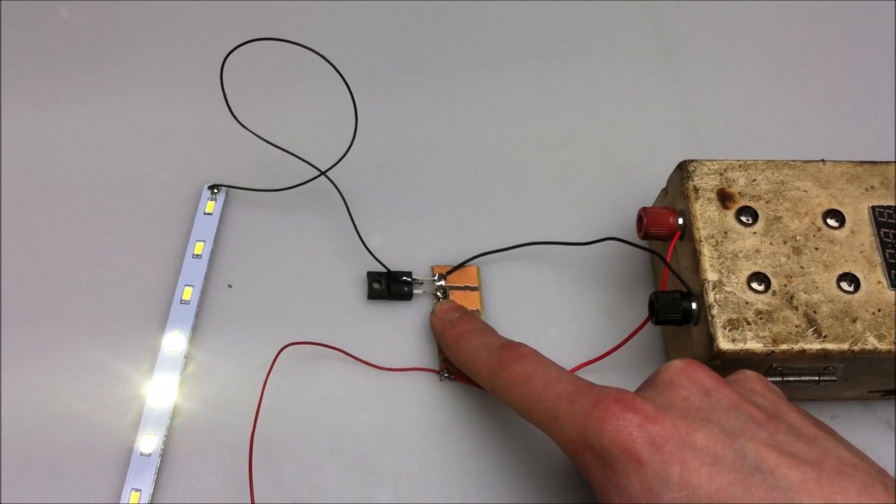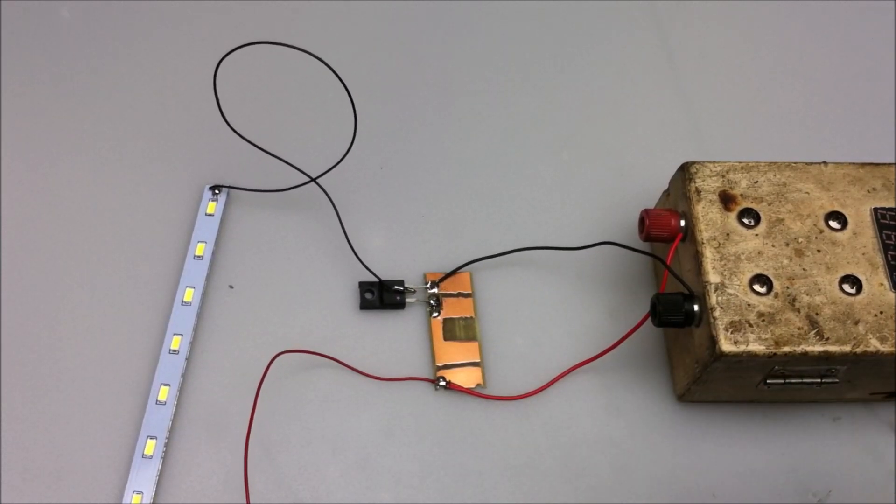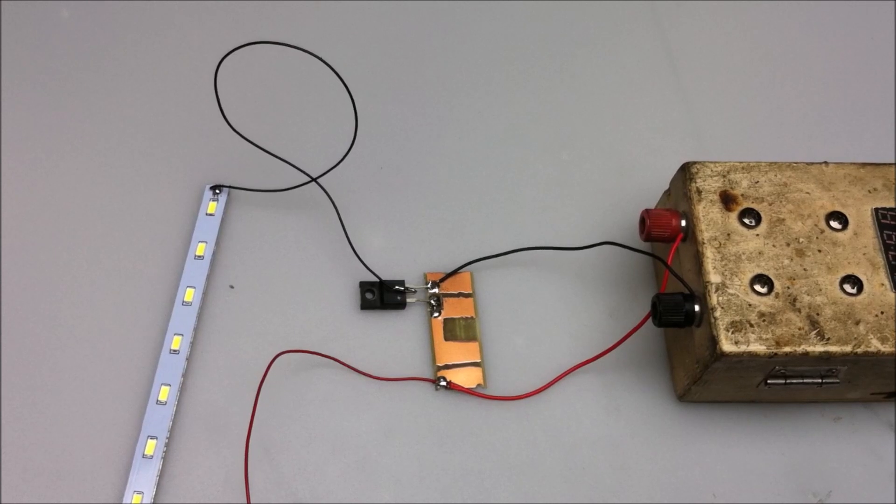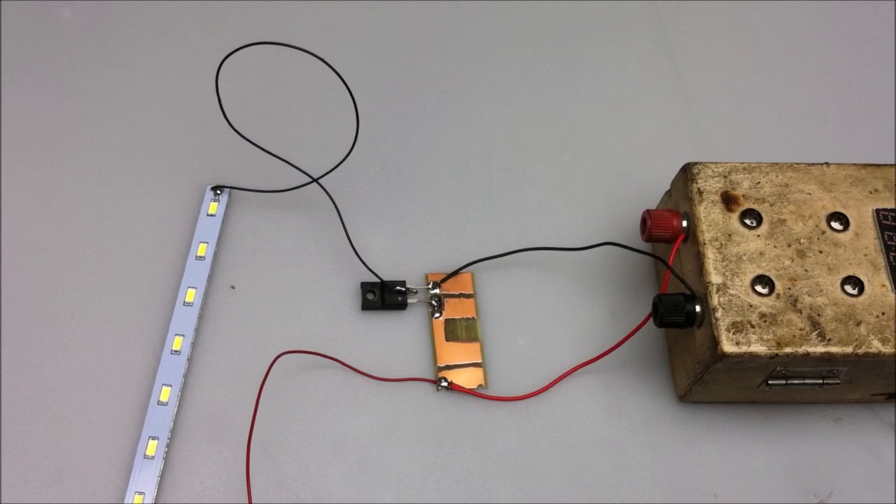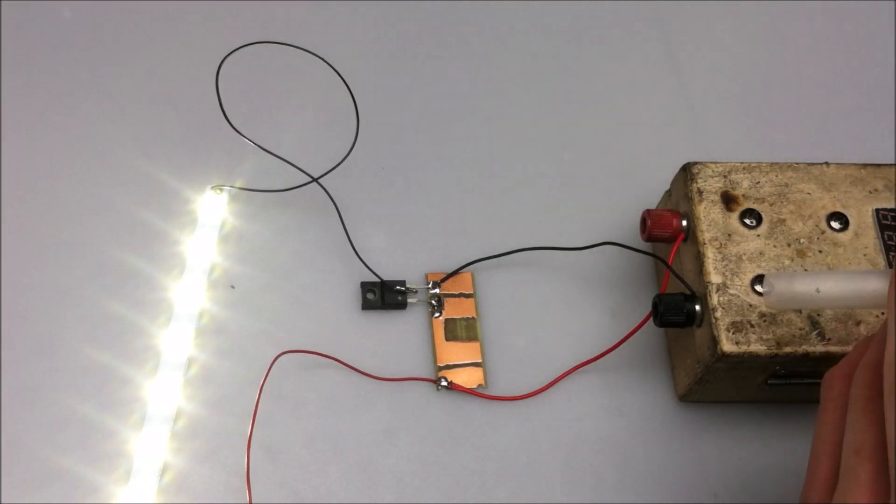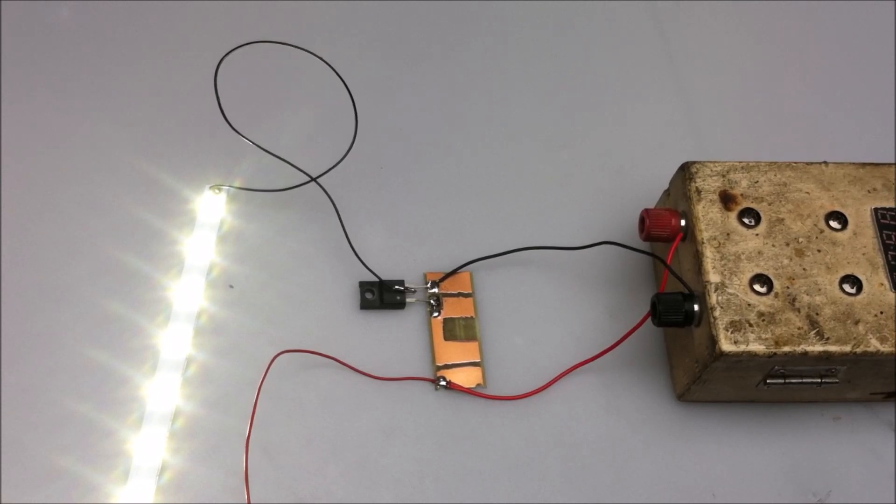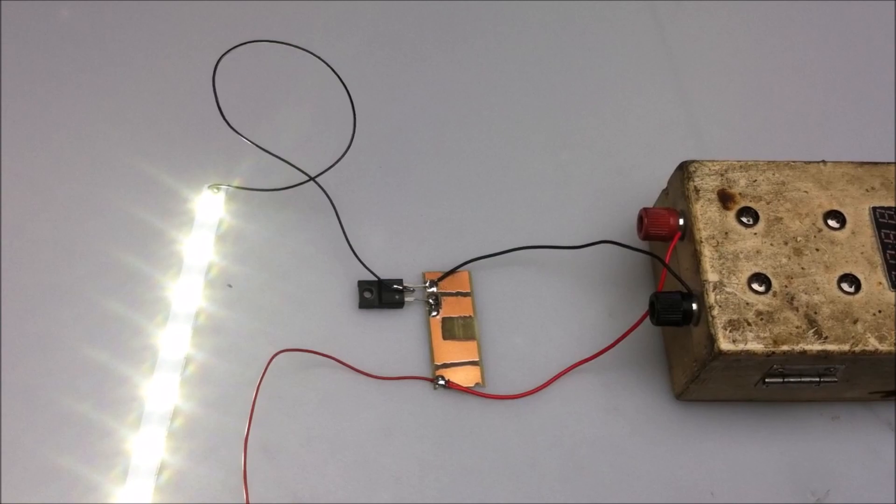The other problem with the MOSFET touch switch is that it's very susceptible to things like moisture. So, for example, I'm going to lightly blow on this circuit, and you'll see that it'll partially turn on or completely turn on. So, these are very, very sensitive circuits, and if you want reliability, I simply can't recommend them.